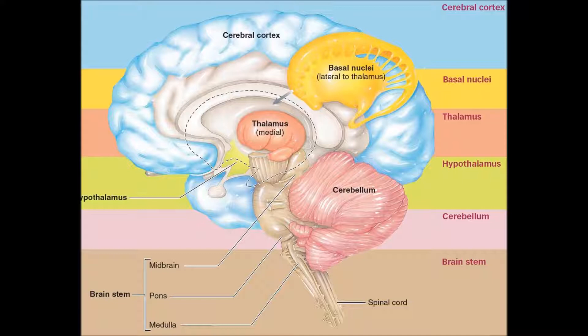The medulla oblongata also handles respiration, swallowing, and basics. It's what triggers — if certain chemicals come in, the medulla oblongata can initiate vomiting, sneezing, and coughing — basic reflexes that if you could consciously control them, you'd work on it.